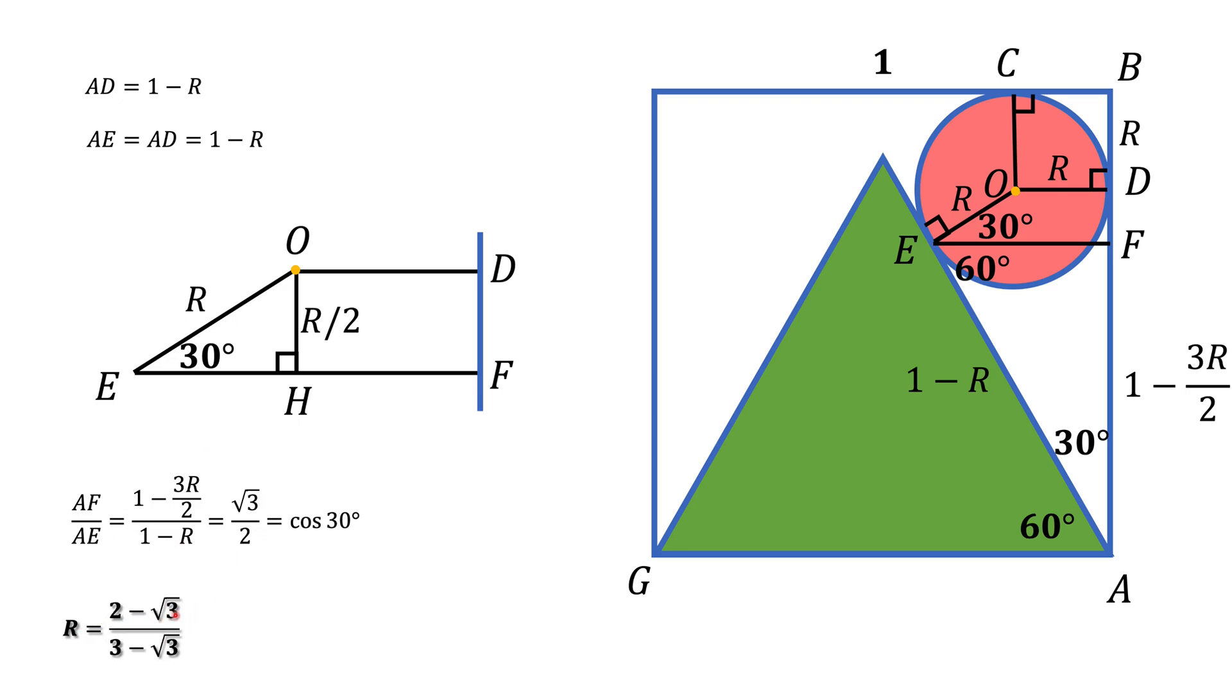And R will be equal to 2 minus square root of 3 divided by 3 minus square root of 3. We could end the things here, because this could be a final answer. But sometimes, people don't like irrationality in denominators. We can get rid of it by multiplying and dividing this expression by a conjugate to the denominator. Denominator is 3 minus square root of 3. The conjugate is 3 plus square root of 3. If you do this, multiplying denominators, you get 6. Multiplying numerators, you get 3 minus square root of 3. And that is our final answer.